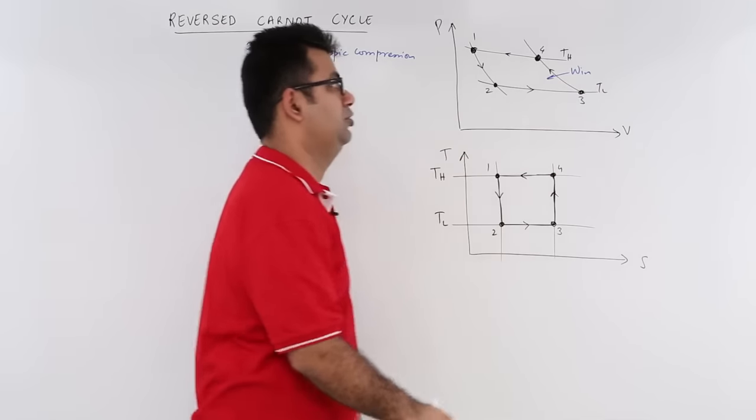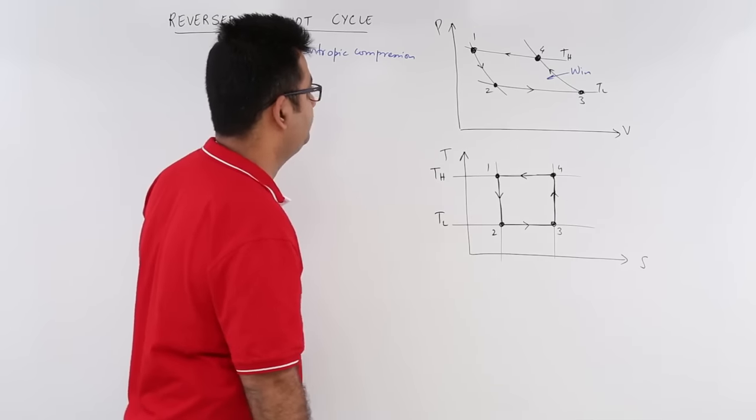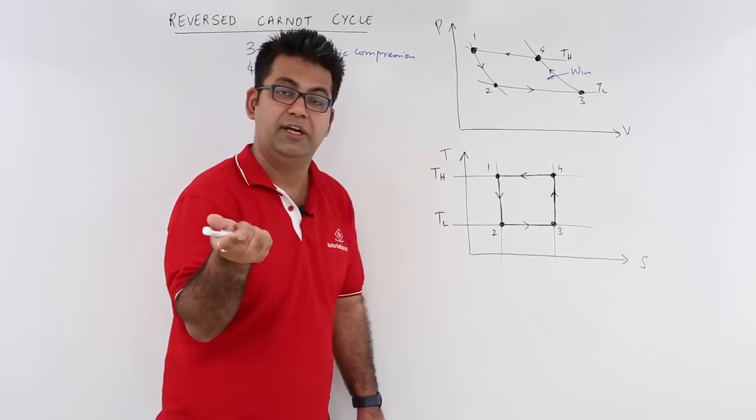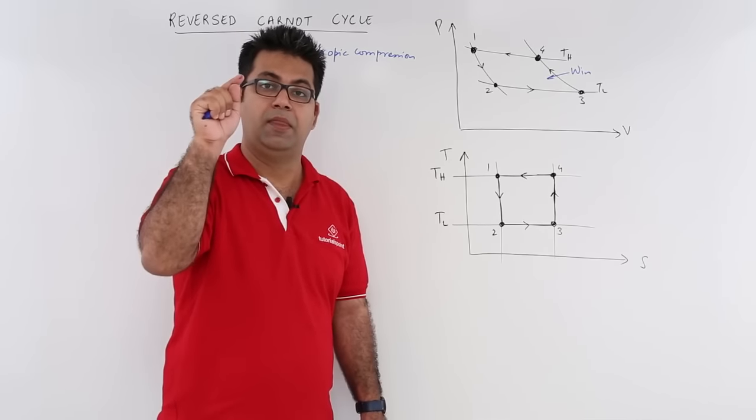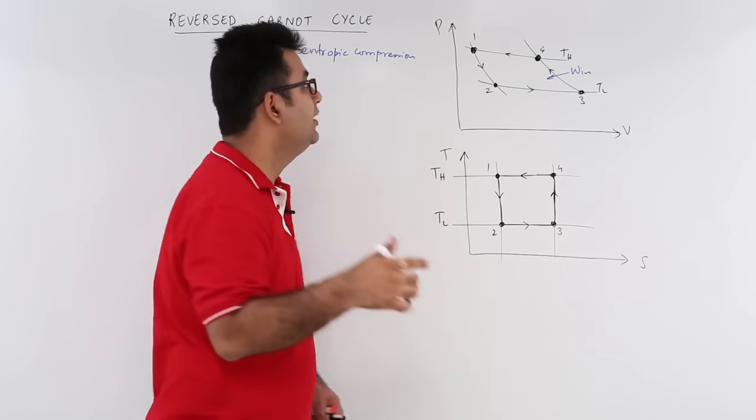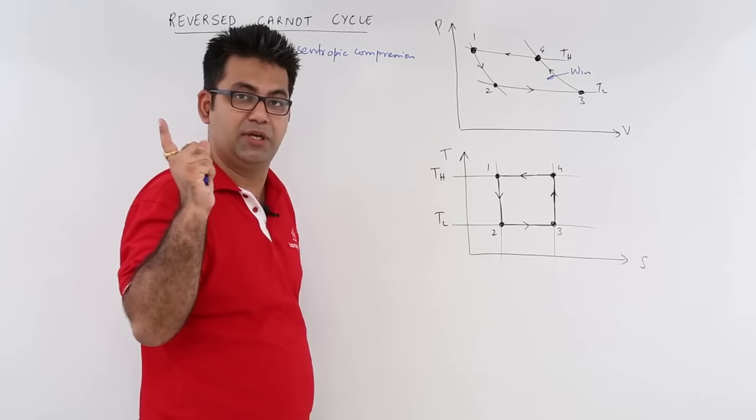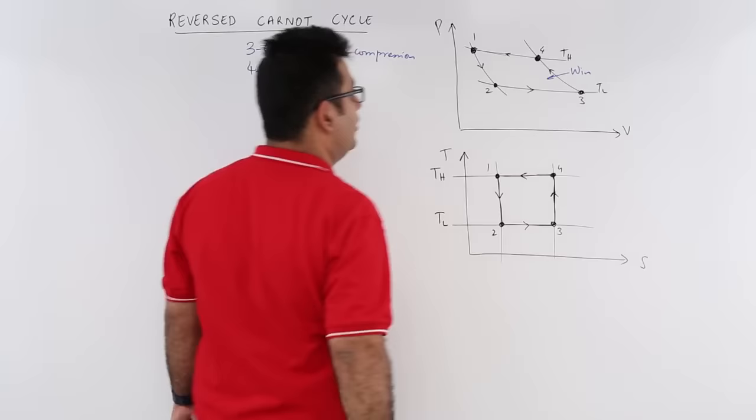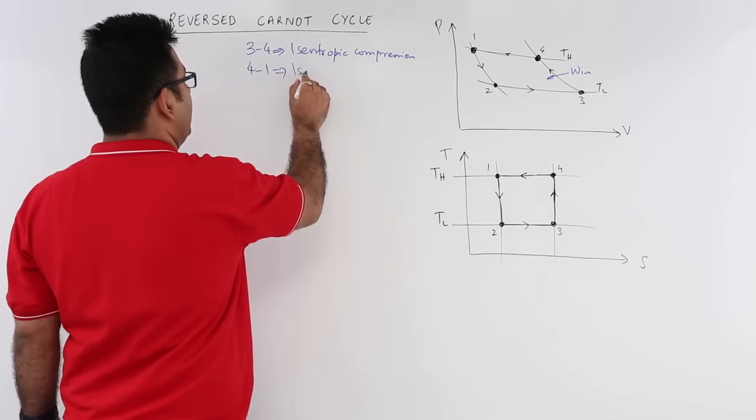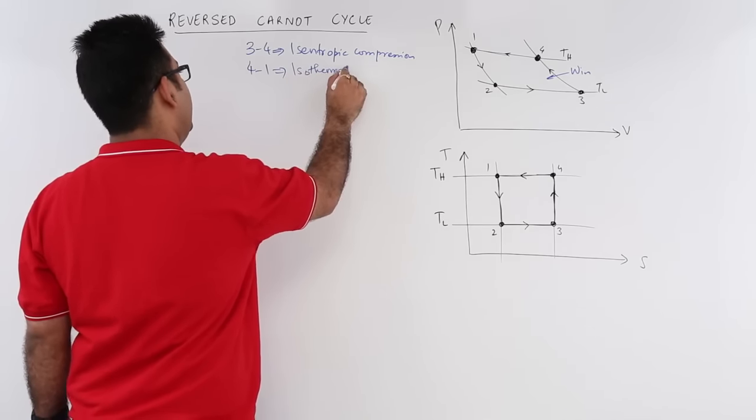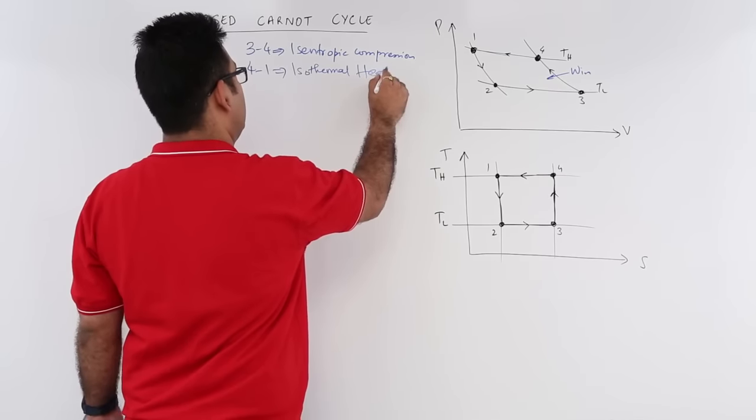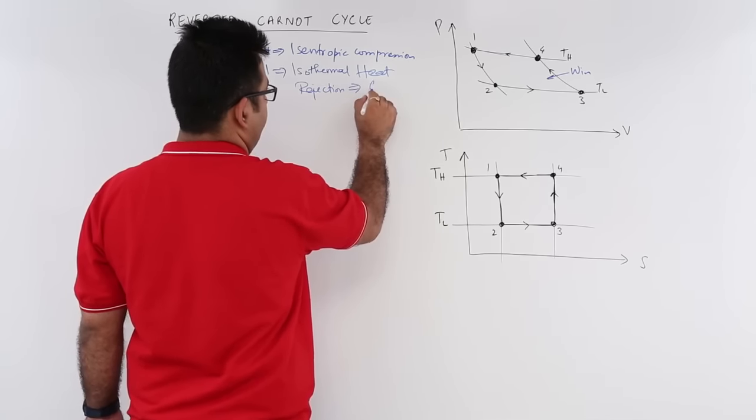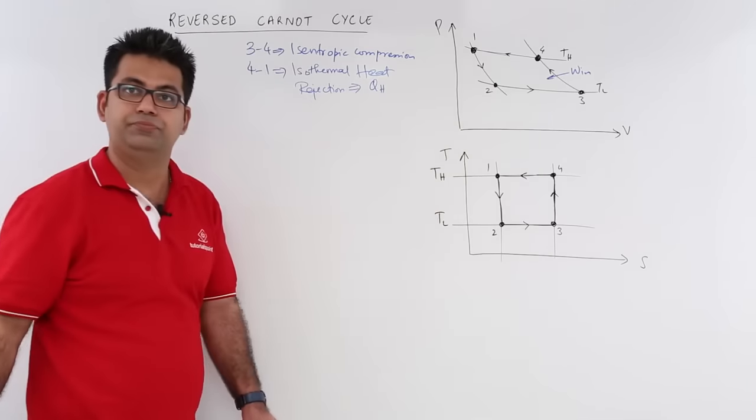Now 4 to 1: after compression, it goes into the condenser. You have phase change from vapor to liquid, which occurs at constant temperature. So 4 to 1 is isothermal heat rejection, and the heat rejected is QH.